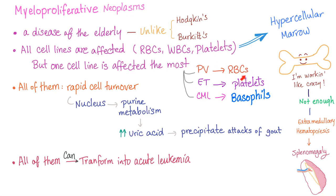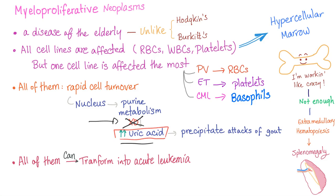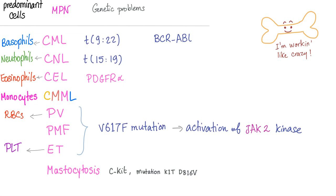How is that related to allopurinol? All of these myeloproliferative neoplasms have rapid cell turnover because there is proliferation, nucleus breakdown and turnover, leading to purine metabolism, uric acid production, and it can precipitate gouty attacks. Before we can make uric acid, we need xanthine oxidase. So if we can inhibit xanthine oxidase using allopurinol or febuxostat, we can prevent the formation of uric acid.